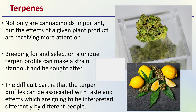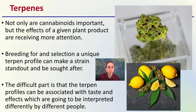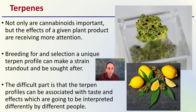In addition, there's terpenes. Not only are cannabinoids important, but the effects of a given product are receiving more attention. Breeding for and selecting a unique terpene profile can make a strain stand out and be sought after. The difficult part is that terpene profiles can be associated with tastes and effects, which are interpreted differently by different people. This is why cannabinoid percentages are typically given a little more weight than terpenes, since flavor preferences vary from person to person.